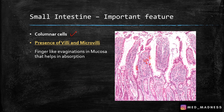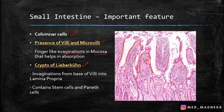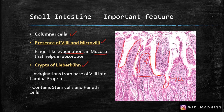The white ones are goblet cells, which help with mucus secretions. The most distinguishing feature of the small intestine is the presence of villi and microvilli — they are finger-like evaginations in the mucosa that help in absorption. Number two: crypts of Lieberkühn. This is the base of the villi — you can see some invaginations. This invagination from the base of the villi into the lamina propria is the crypts of Lieberkühn.